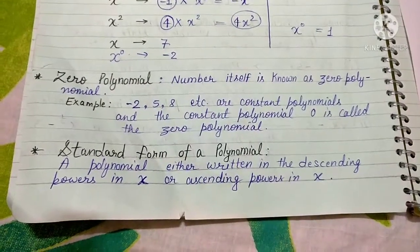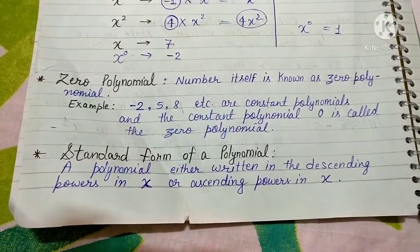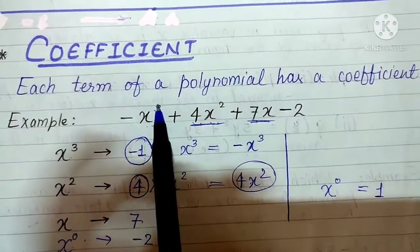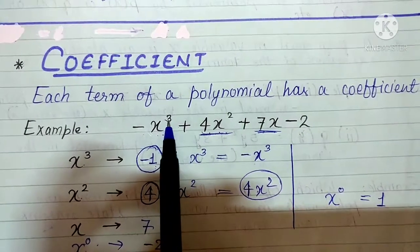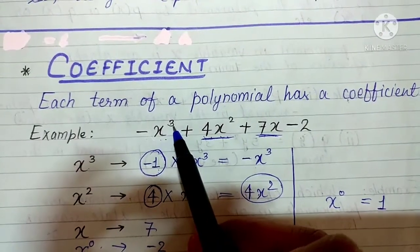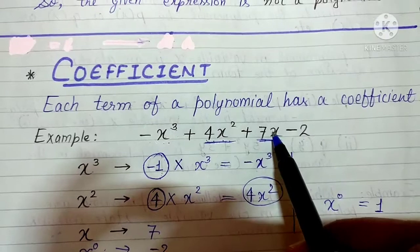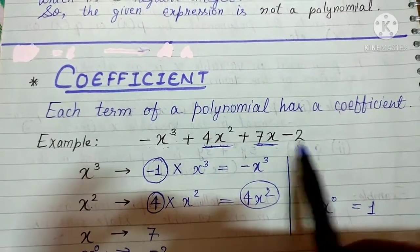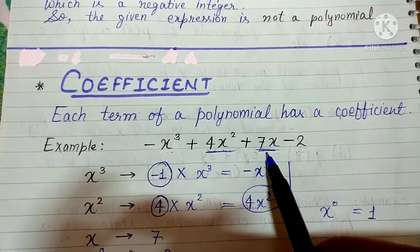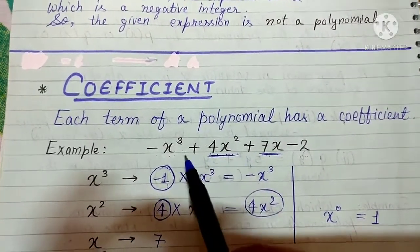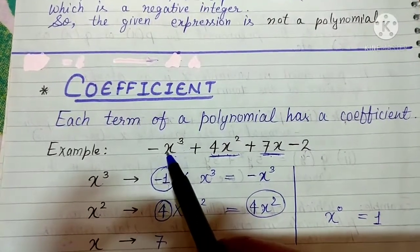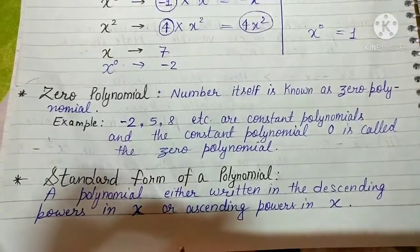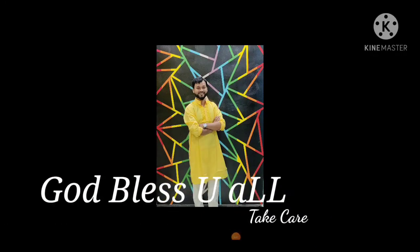The next topic is the standard form of a polynomial. We should write a polynomial either in ascending or descending order of the powers of x. For example, minus x cube plus 4x square plus 7x minus 2 is written in descending order — from the highest power down to the constant. Or we can write it in ascending order: minus 2 plus 7x plus 4x square minus x cube. Either form is the standard form of the polynomial. Be safe and God bless you all.